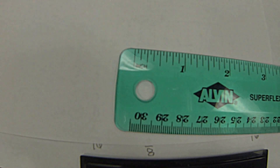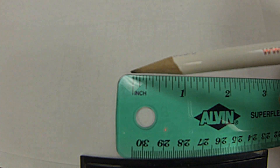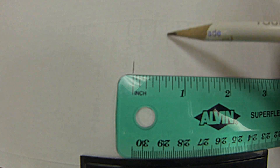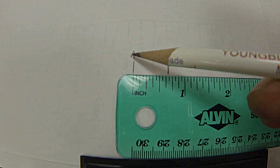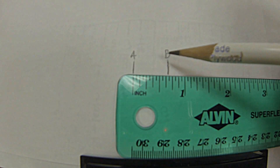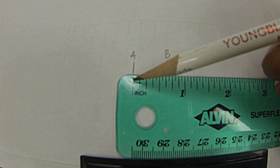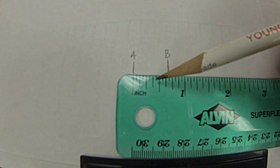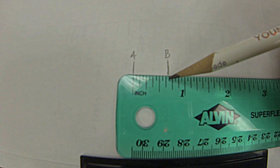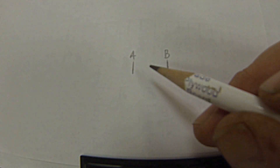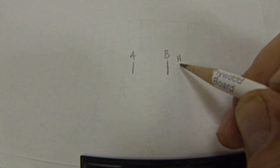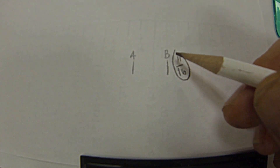Now, how do you read the rule? If we have a measurement anywhere between 0 and the whole number — say between A and B — I simply count up: 0, 1, 2, 3, 4, 5, 6, 7, 8, 9, 10, 11. I counted 11 little lines. The smallest unit of measure on this scale is a 16th, so that distance is 11 sixteenths.